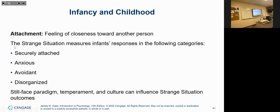Avoidant attachment is usually seen with negligent parents — not necessarily abusive, but negligent. The child doesn't feel safe with the parent, so they're constantly doing things on their own. Being held by mom might create anxiety. Disorganized attachment is where the child's mood is all over the map — sometimes happy when mom's there, sometimes throwing a fit. These patterns are important for adulthood too.